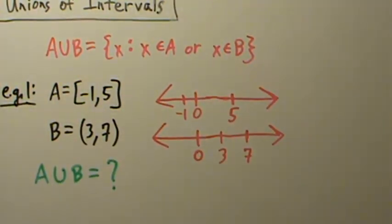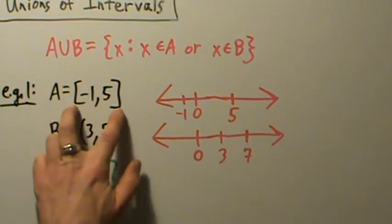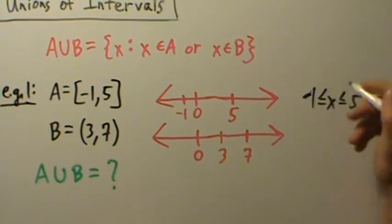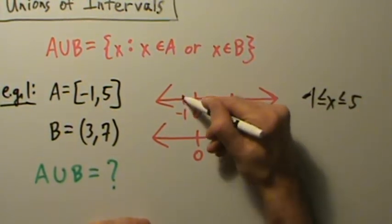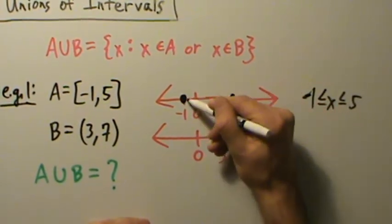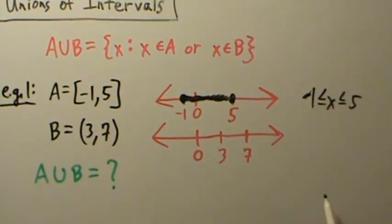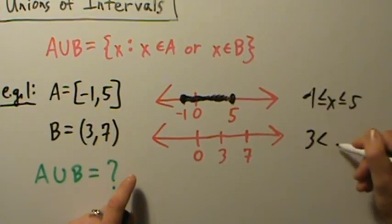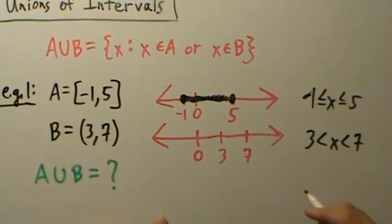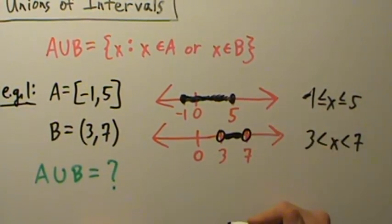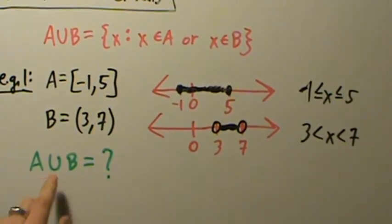Now let's fill these in. For A = [-1, 5], the square brackets mean -1 ≤ x ≤ 5, so we use solid circles on -1 and 5, with a filled line between them. For B = (3, 7), we have 3 < x < 7, so open circles on 3 and 7 with a line between them.